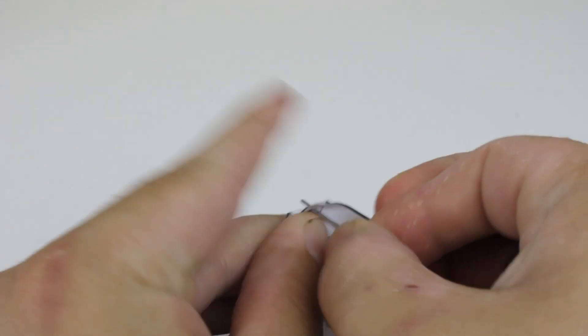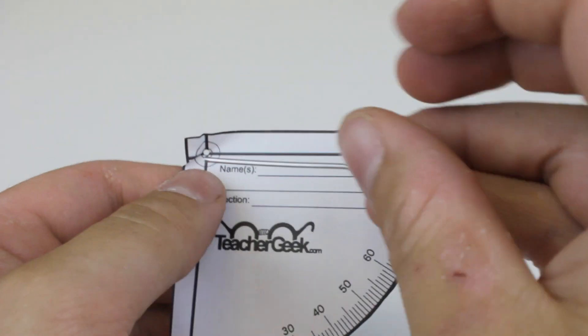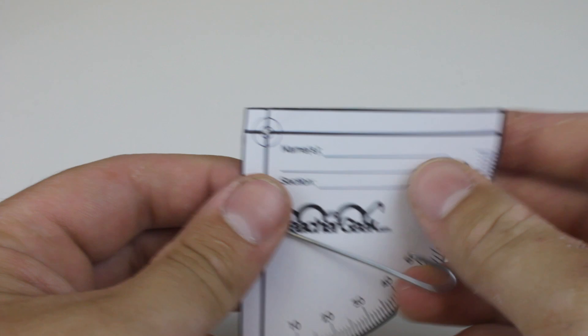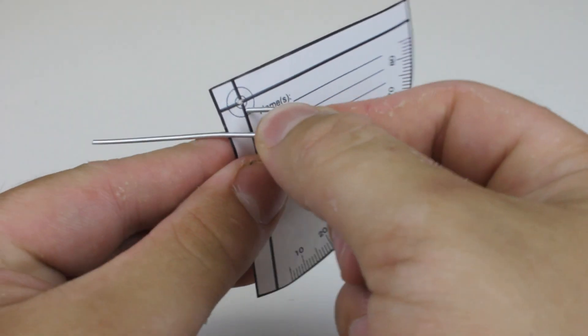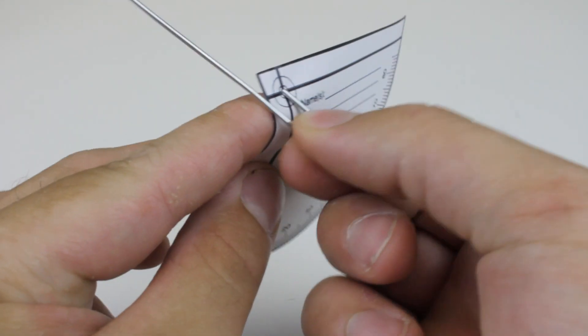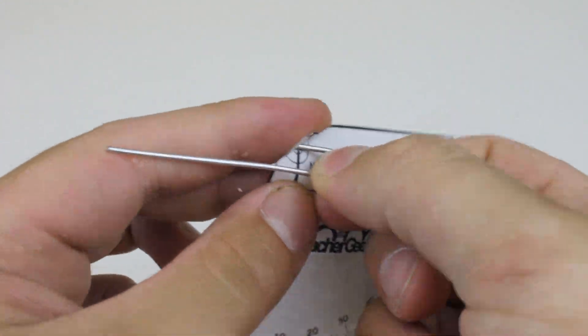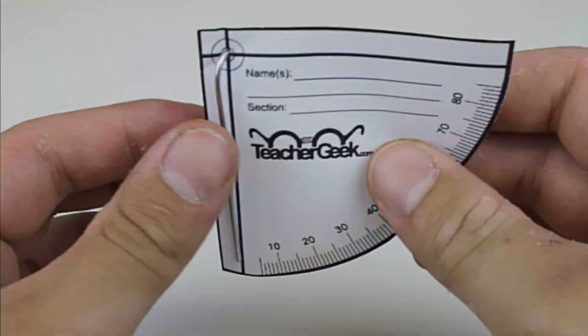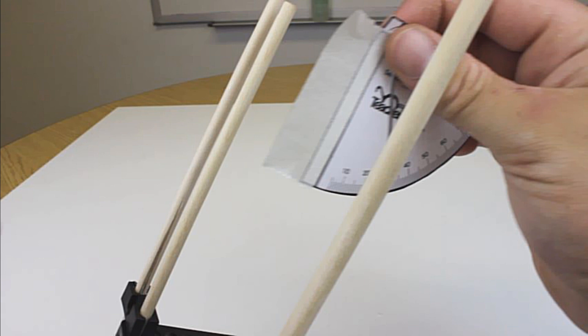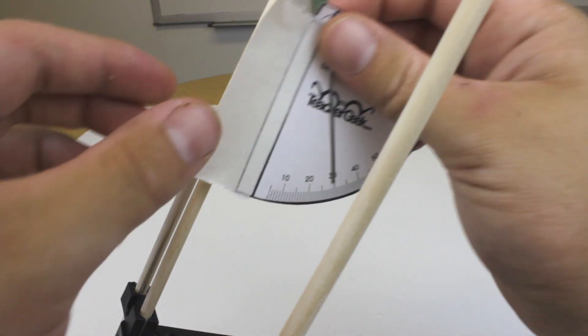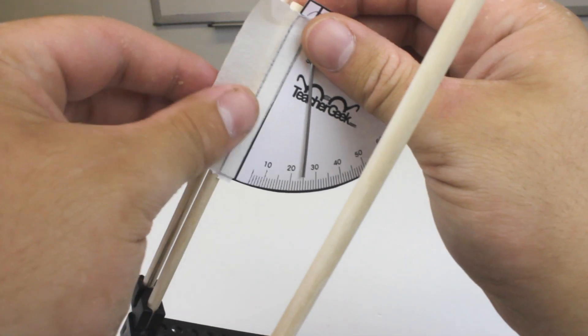Punch a hole in the top of the launcher protractor where the hole is marked out using the wire you just bent. Then place the wire in the hole so that the longer end is facing outwards. Place a piece of tape onto your launcher protractor, and then tape it onto the 6 inch dowel.